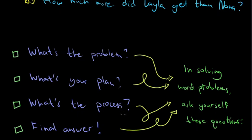The third question is: what's the process? It's basically how you're going to carry out your plan — how you will implement it. Once you know the operations to use, carry them out. And finally, your final answer. Most of the time, teachers require a complete statement, so your answer needs to be written as a sentence. We'll look at how to write our final answer in statement form for this word problem.